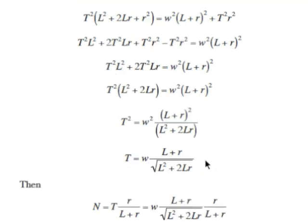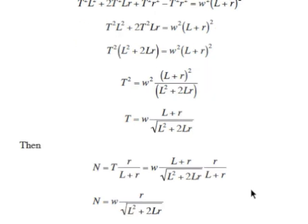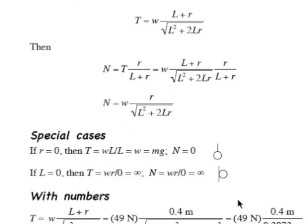Now we plug our expression for t back into n equals t times R over (L plus R). The (L plus R) factors in the numerator and denominator cancel, leaving n equals W times R over the square root of (L² plus 2LR). The units check out as well: weight is a force, R is a distance, (L² plus 2LR) is distance squared, so R over the square root of distance squared is dimensionless, giving units of force.